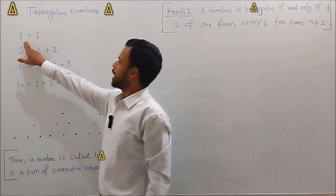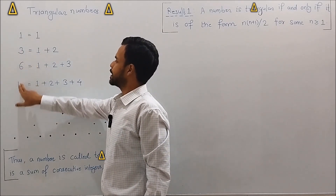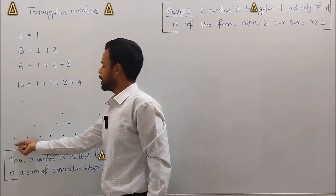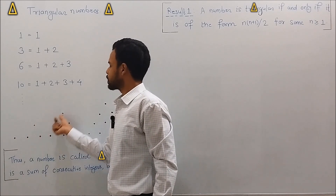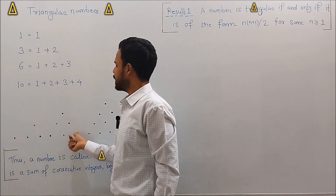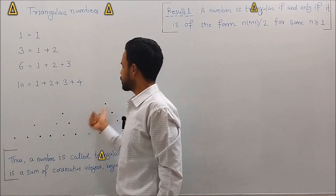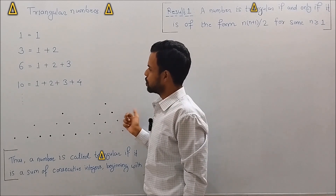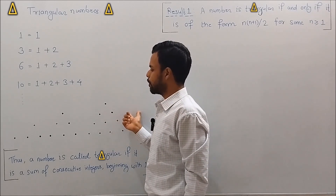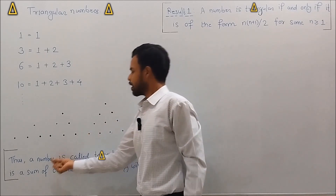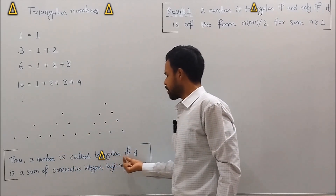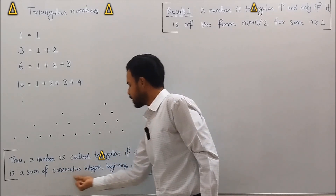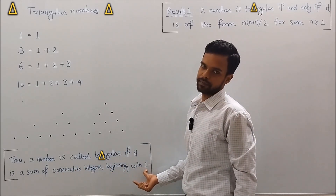We can see that the numbers 1, 3, 6, 10, and so on can be represented as a number of dots that can be evenly arranged in an equilateral triangle. This leads to the definition: a number is called triangular if it is a sum of consecutive integers beginning with 1.